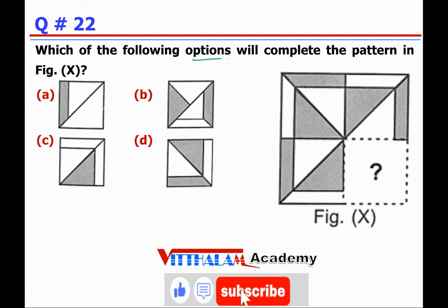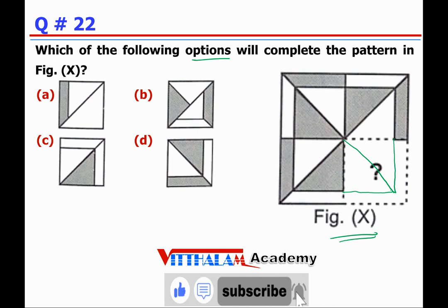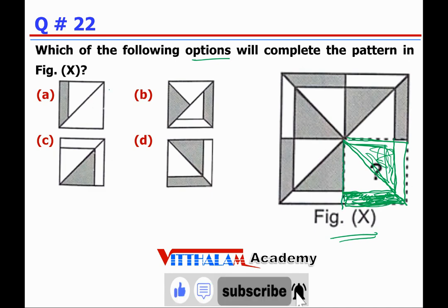Question 22: Which of the following options will complete the pattern in figure X? Drawing it out, the figure goes up to a certain point and then has a shaded dark section. This part will be shaded. Looking at the options, some cannot be correct, and the matching figure is identified as the answer.